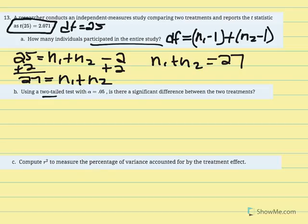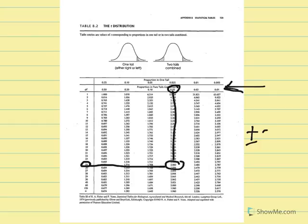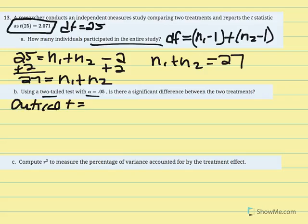Next, using a two-tailed test with alpha equal to 0.05, we find the critical t using degrees of freedom of 25. In the t-distribution table with df equal to 25 and two-tailed test at 0.05, we find the critical t equal to plus or minus 2.060.